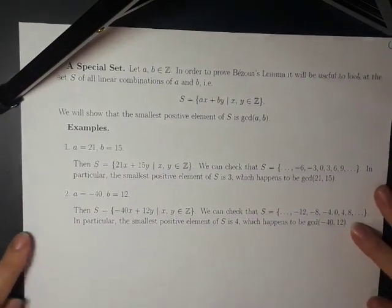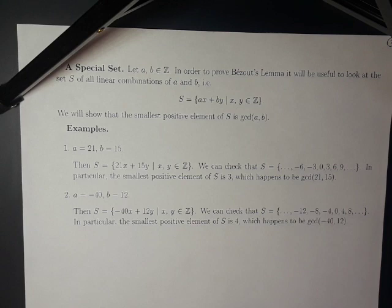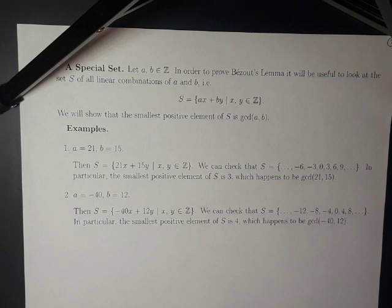The proof of Bezout's lemma will rely on the construction of a special set. If we look at the set S of all linear combinations of a and b — in other words, S is the set of all ax plus by where x and y are integers — we will show that the GCD of a and b is an element of this set. In fact, we will show that the GCD of a and b is the smallest positive element of this set S.